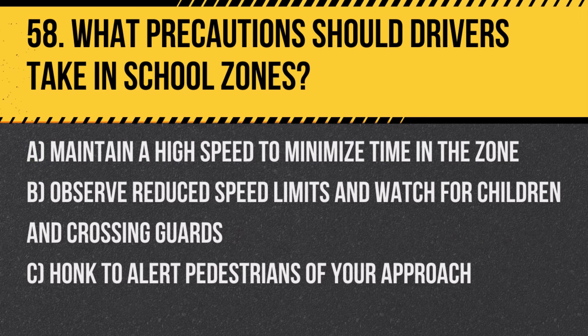Question 58: What precautions should drivers take in school zones? A. Maintain a high speed to minimize time in the zone. B. Observe reduced speed limits and watch for children and crossing guards. C. Honk to alert pedestrians of your approach. Answer: B. Observe reduced speed limits and watch for children and crossing guards. These actions ensure the safety of children around schools.